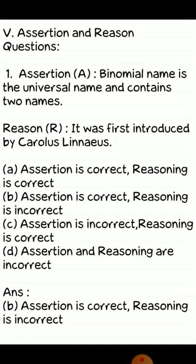Assertion and reason questions. First: Assertion — binomial name is the universal name and contains two names. Reason — it was first introduced by Carolus Linnaeus. Options: A. Both correct, B. Assertion correct, reason incorrect, C. Assertion incorrect, reason correct, D. Both incorrect. Answer: B — assertion is correct, reasoning is incorrect.